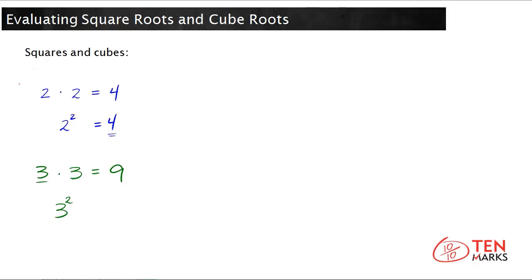What about if we wanted to do cubes? Cubes are similar, except that it's multiplying the number by itself 3 times. So 2 times 2 times 2 equals 8. 8 is a cube. We can rewrite this as an exponent where the base is the number you're multiplying by itself, and the exponent is how many times you do that multiplication. For a cube, it's always going to be 3.